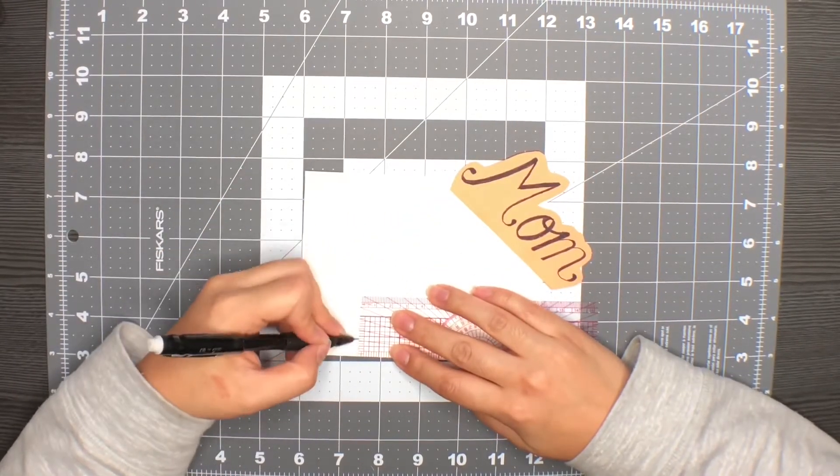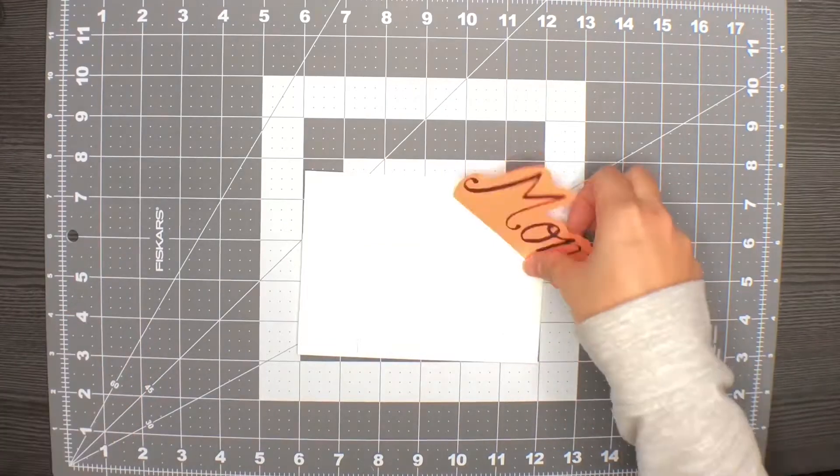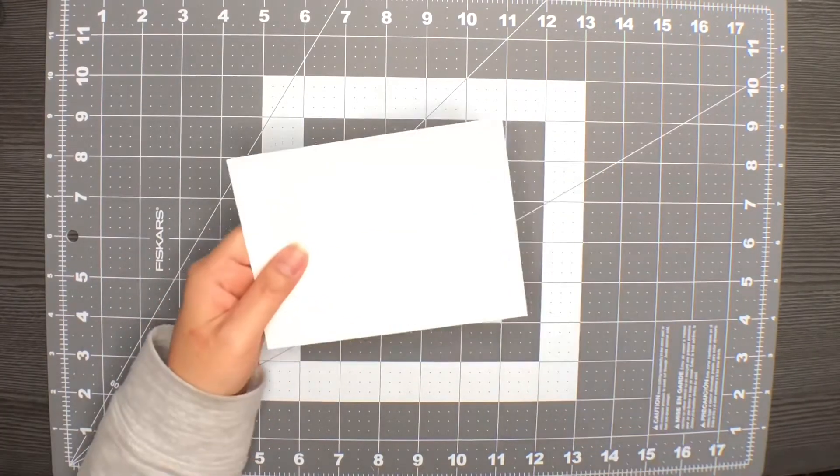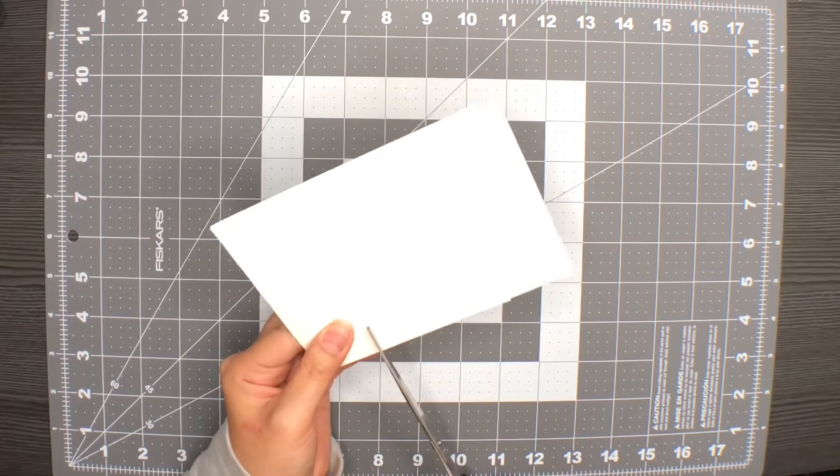Using a ruler, we're going to be making lines perpendicular to the crease and these will be about an inch. Followed by cutting them with the scissors.